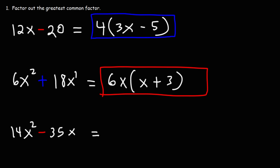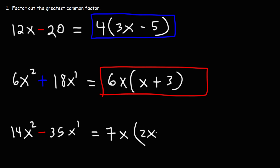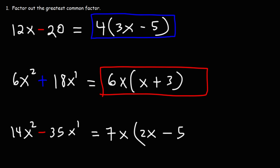What is the GCF for the next one? 14 and 35 are multiples of 7 — 7 can go into both 14 and 35. Here we have an x squared and an x, so we can take out at least one x. The GCF is 7x. 14x squared divided by 7x is 2x. Negative 35x divided by 7x is negative 5.